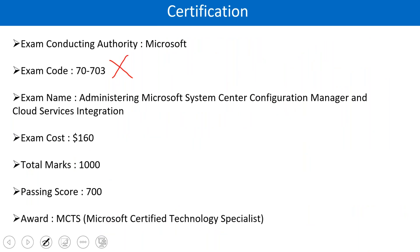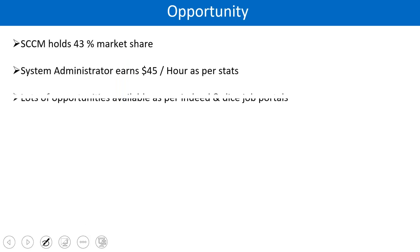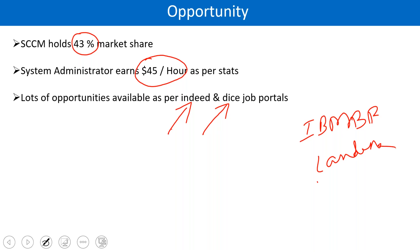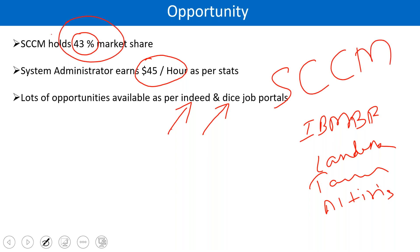The certification exam was there, but it is expired now. We don't have any exam at the moment. As for opportunities, wherever you go, you will find SCCM. It has 43% of market share. People who are working on SCCM are earning somewhere around 45 US dollars per hour. You have job opportunities in Indeed and Dice portal — these are the two leading job portals in the US and Canada. Other competitors of SCCM include IBM BigFix, LANDESK, TANIUM, and Altrace, but these are way behind. SCCM is on the top with 43% market share.